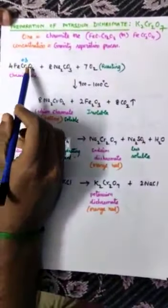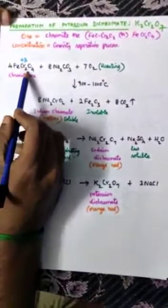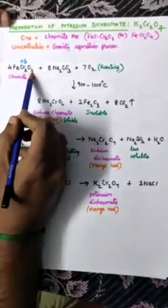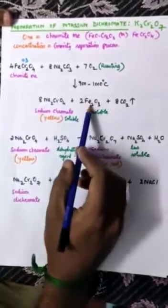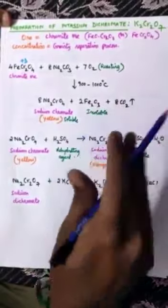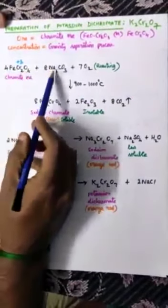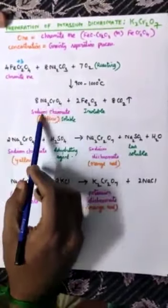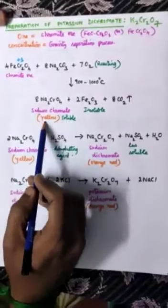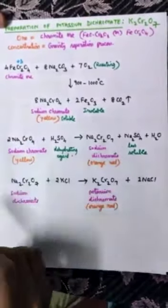While doing so, the chromite ore is converted into sodium chromate, plus iron oxide, plus carbon dioxide gas. Wherever carbonate is used as the reactant, carbon dioxide will be evolved in the product. The iron is removed as insoluble Fe2O3, and chromium remains as sodium chromate. This is the first step.